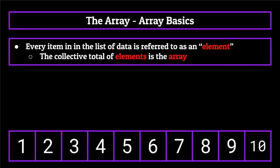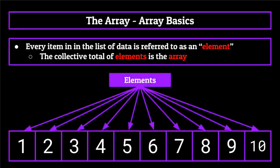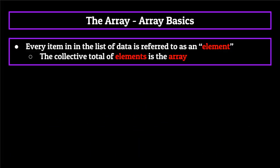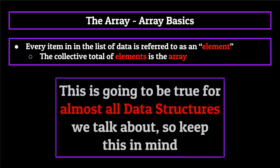Every item contained within the array is referred to as an element of that array, and we call the collective total of elements the array. This is going to be true for almost all data structures we talk about, so just keep that in mind.